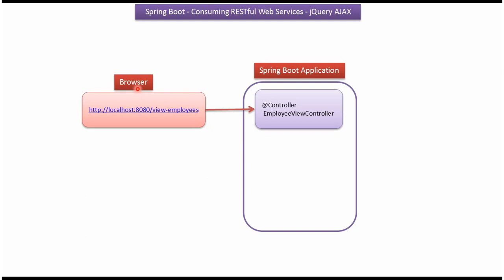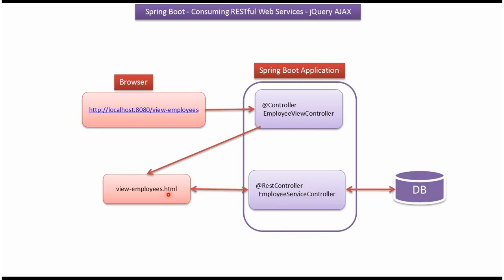Here you can see the Browser. From the Browser, we will send a request to the Employee View Controller, and that redirects to ViewEmployees.html. In this HTML file, we will write jQuery Ajax code to get all Employee Records from the DB by calling the REST Endpoint in the Employee Service Controller.